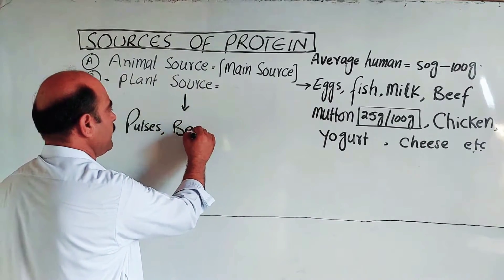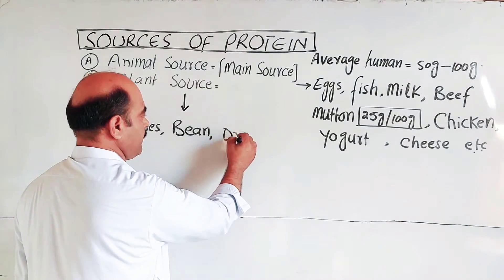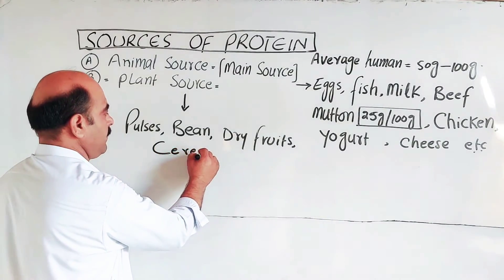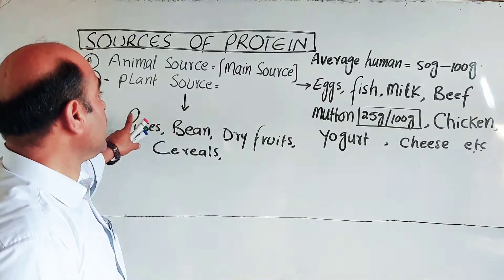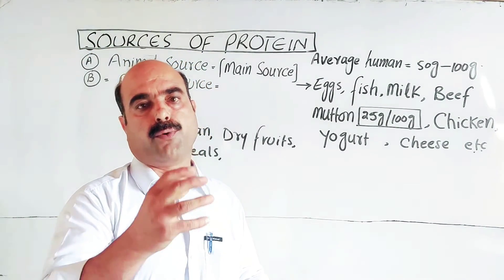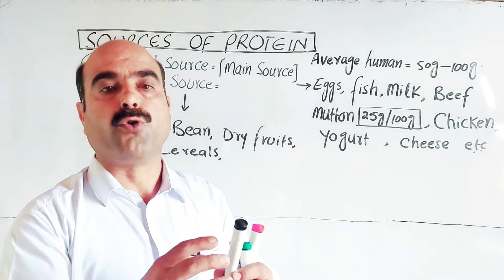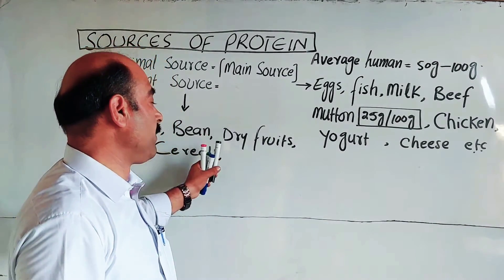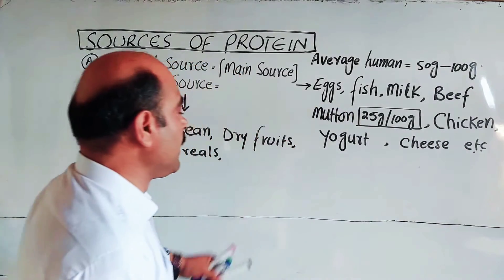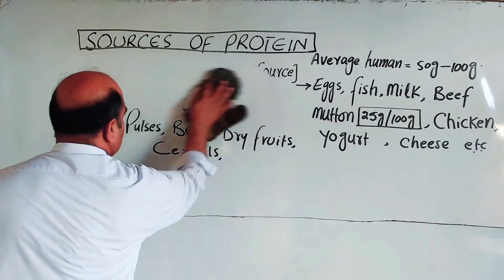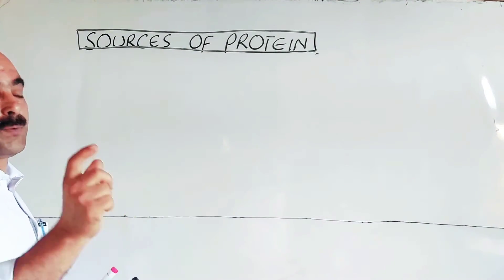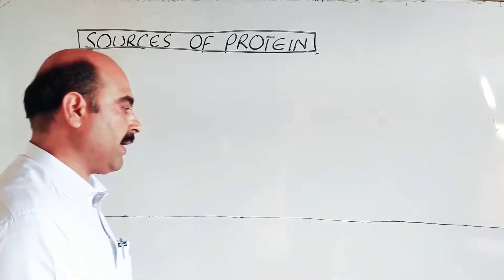Plant sources are very important. There is a table showing the protein content per 100 grams. This table lists both plant sources and animal sources. The table is very important - you must note it down. It shows protein content per hundred grams.